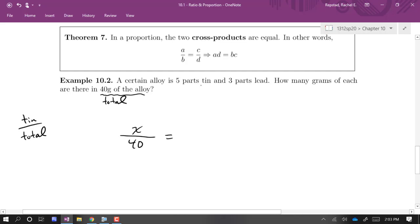And I know that this is equal to, now over here, this ratio, five parts tin and three parts lead, that means there's eight parts total. So this ratio is five over eight.